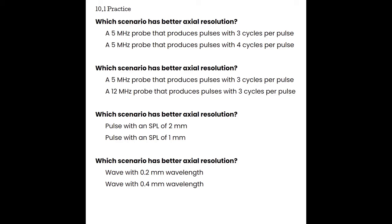The first question asks which scenario has better axial resolution: a 5 MHz probe with 3 cycles per pulse, or a 5 MHz probe with 4 cycles per pulse? Remember, we want highest frequency and lowest cycles per pulse. Frequency is the same here, so we choose the lowest cycles per pulse — the 3-cycle probe. The second question: a 5 MHz probe with 3 cycles per pulse, or a 12 MHz probe with 3 cycles per pulse? Both have 3 cycles, so we focus on frequency. We want the highest frequency. The 12 MHz transducer provides better axial resolution.